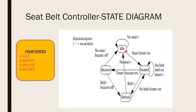In the idle state, no person is in the seat. When a person sits, we move to the seated state. If the person does not wear the belt within a particular interval of time, information is sent to the buzzer and the buzzer sound is heard. If the person puts on the belt within that interval, the system moves to the belted state. When the person gets down from the car, it returns to the idle state. Using these states, we can easily understand the principle behind this controller — the State Machine is very essential.